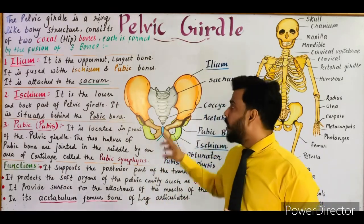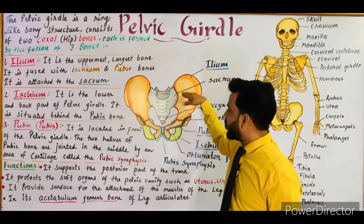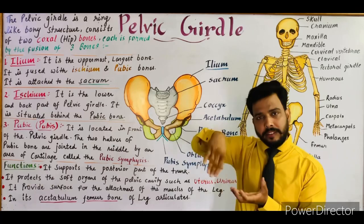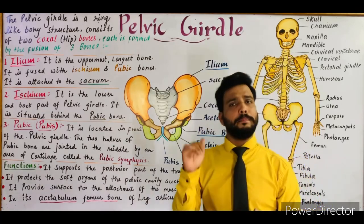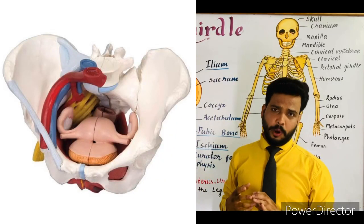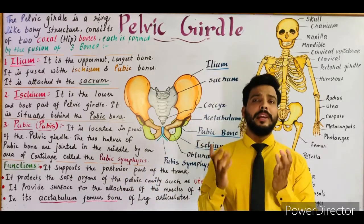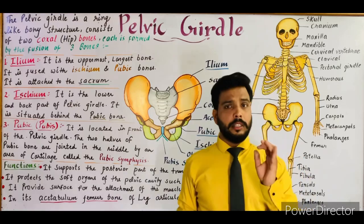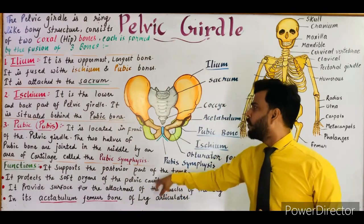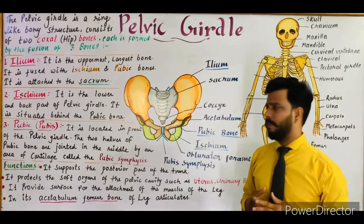The pelvic cavity is the vacant space present inside the ring-like pelvic girdle. In this pelvic cavity, different soft organs of our body are situated — such as the urinary bladder and the uterus in females. This bony ring-like pelvic girdle protects these soft organs situated inside the pelvic cavity.